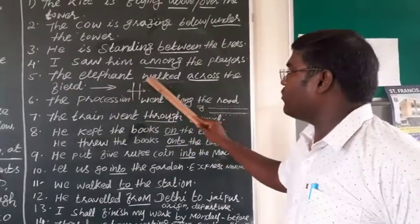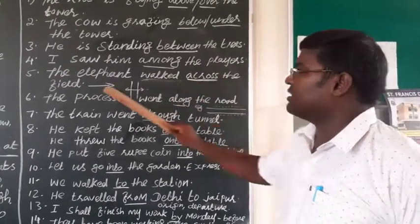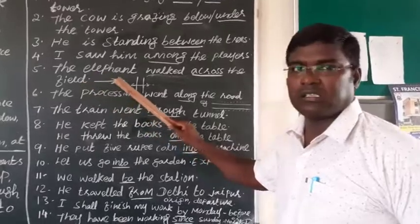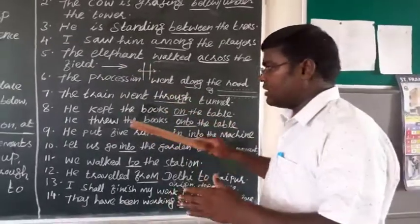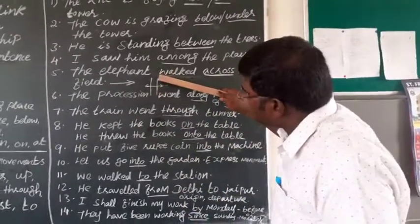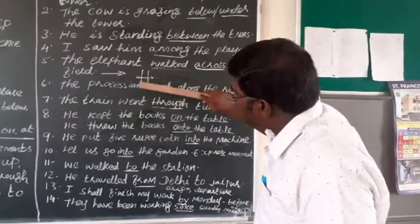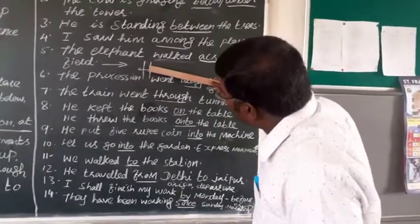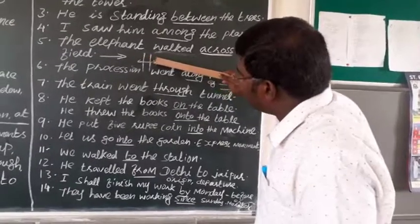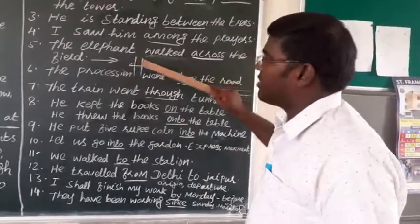Fifth one. The elephant walked across the field. Across means, just, you have the road. See, you consider this is the road, going like that. Across means just going between, going here. It's called across.